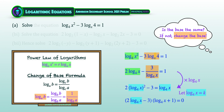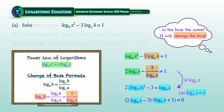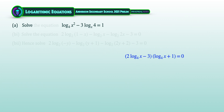Then we factorize this quadratic equation. Solving it gives the first solution set: log x to the base of 4 equal to 3 over 2, or log x to the base of 4 equal to negative 1.